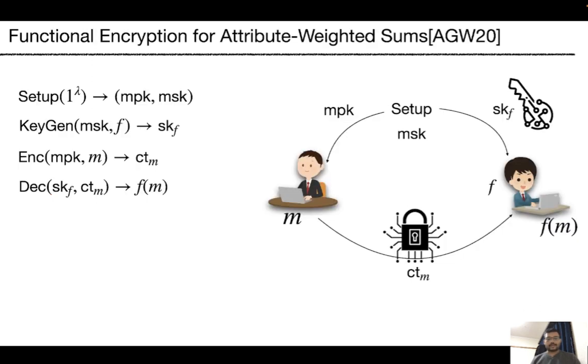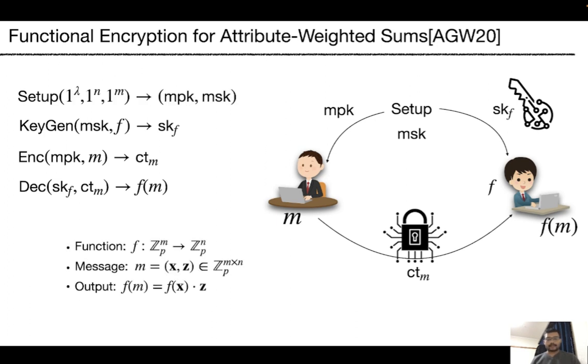Namely, attribute weighted sums or AWS, introduced by Abdalla, Gong, and Wee. Here, secret keys are generated for functions which take input a vector of length M and output a vector of length N. The message is a tuple of X and Z, where X is public and Z is private. The functionality outputs the inner product between the vectors f of X and Z.